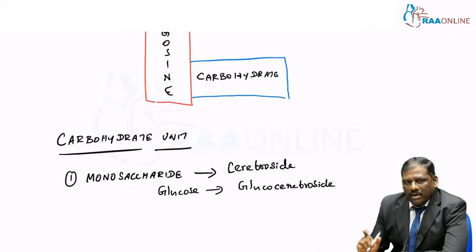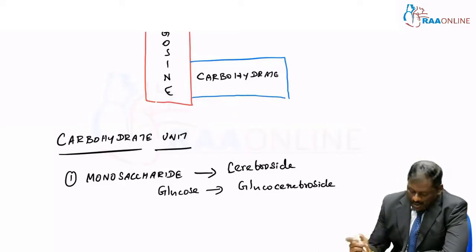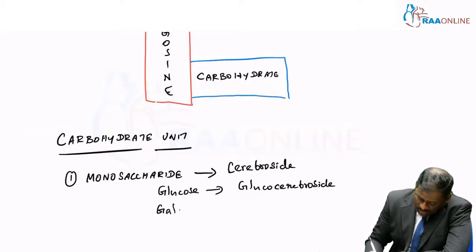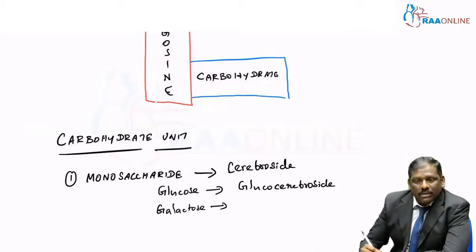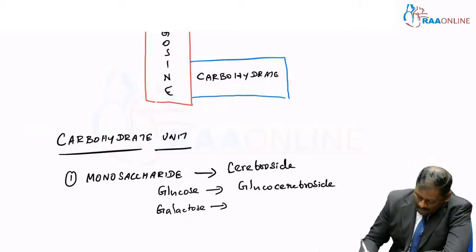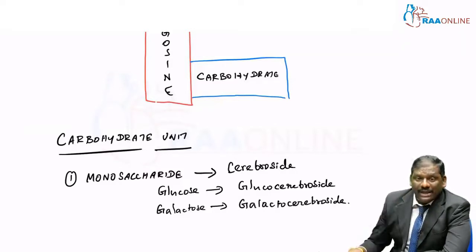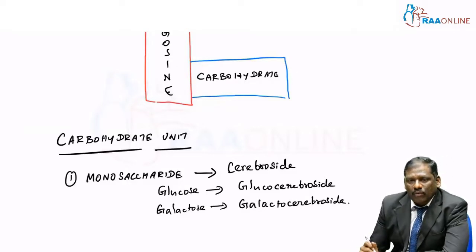The glucocerebroside will form part of various kinds of sphingolipids in various tissues, but mostly these tissues will be non-neural tissues. We have got another monosaccharide which is galactose. If it becomes the additional group here, then this becomes galactocerebroside. The galactocerebroside actually forms the major component of neural tissues in your body.